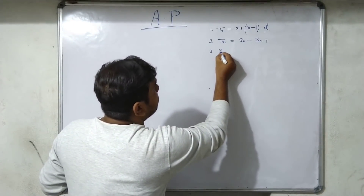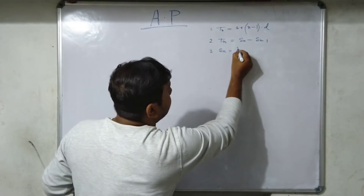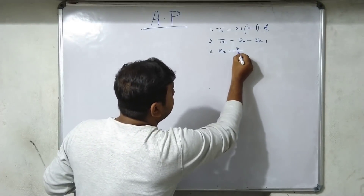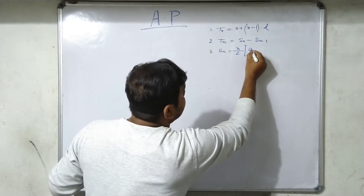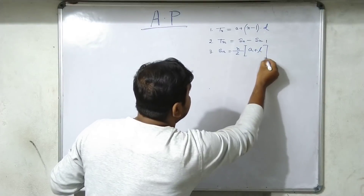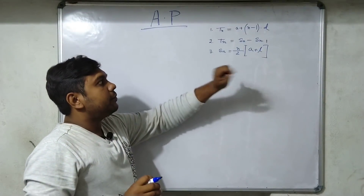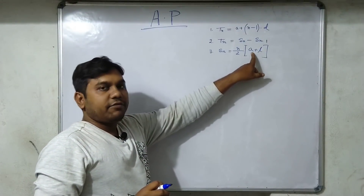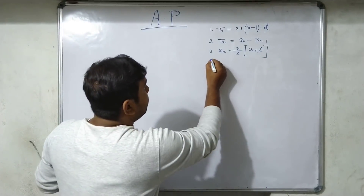Formula 3: Sₙ = N/2 × (A + L), where N is the number of terms, A is the first term, and L is the last term.